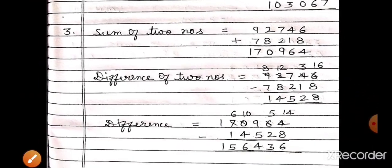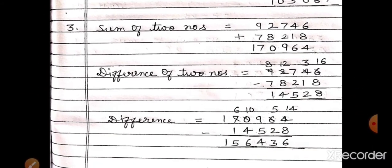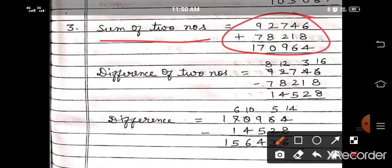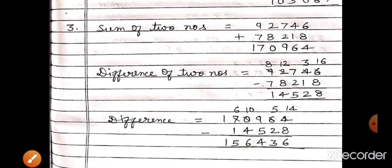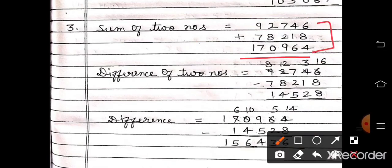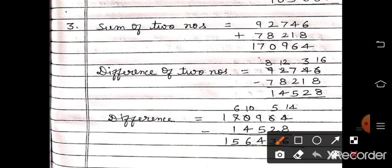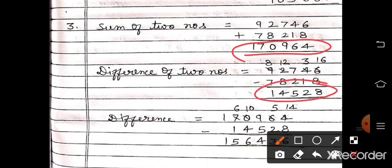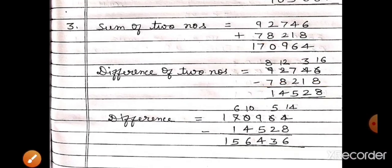Now question number 3: By how much is the sum of 92,746 and 78,218 greater than their difference? First take out the sum of both numbers, then find the difference of both numbers. Then subtract the difference from the sum — the answer will come 1,56,436.